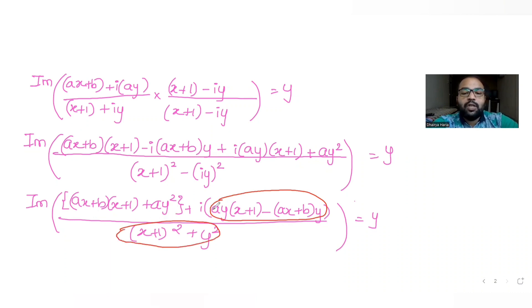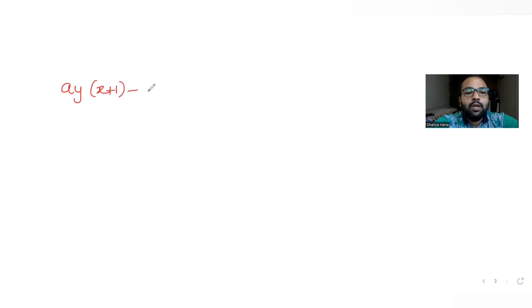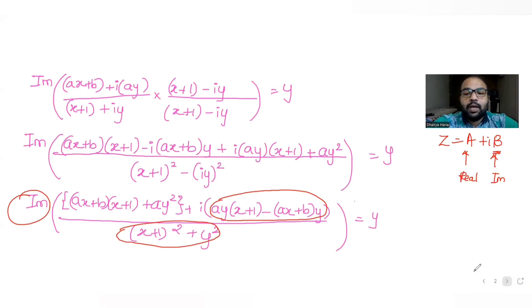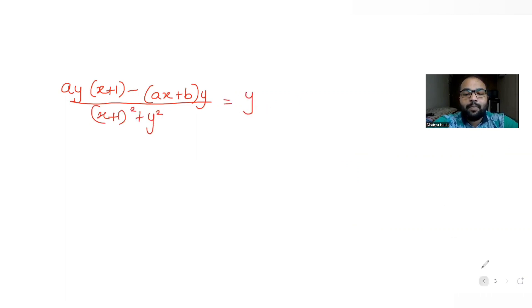In a complex number z = a + ib, the term with i is the imaginary part and the term without i is the real part. So equating just the imaginary part, I get: [ay(x + 1) − (ax + b)y] divided by [(x + 1)² + y²] equals y.